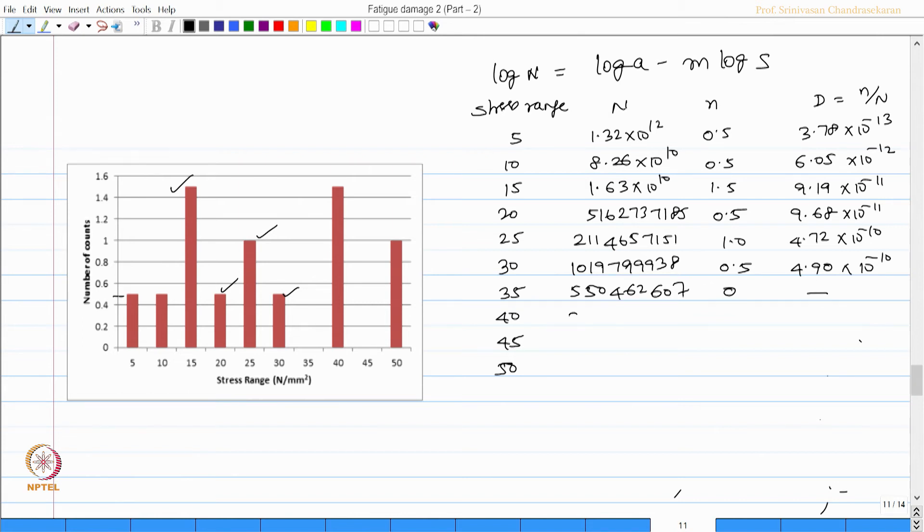For 40, this is 322,671,074, is 1.5, and this value is 4.65 × 10^-9. For 45, it is 0 because 45 has no stress value. For 50: 13,216,607, 2, and the value is 1, and this is 7.56 × 10^-9. I make the sum, find the cumulative value which is 1.3373 × 10^-8.